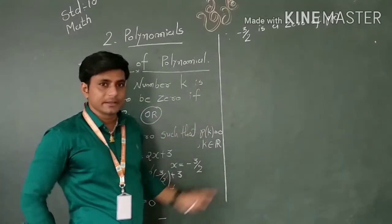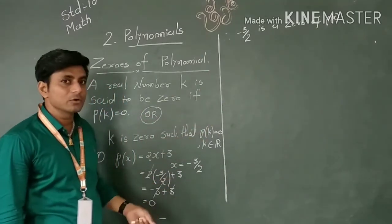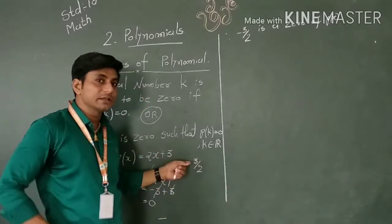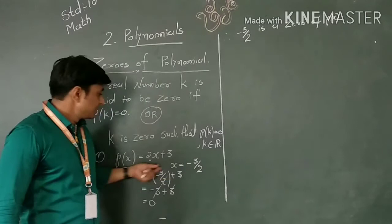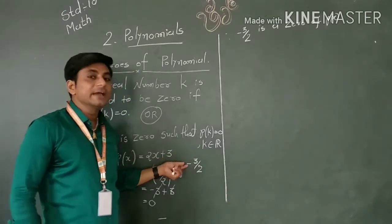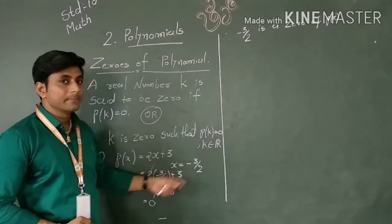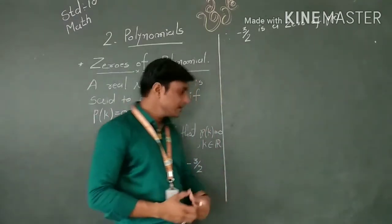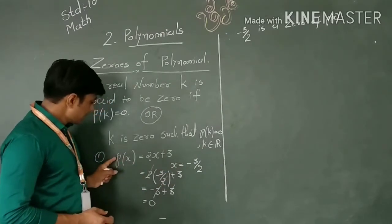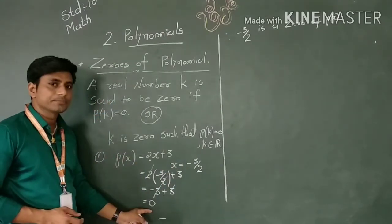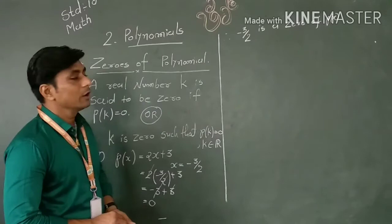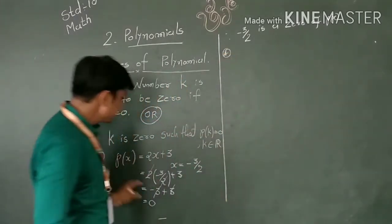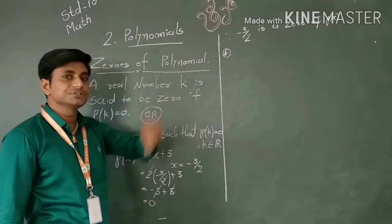This is the algebraic meaning. How do we find the zero? Here I chose x equal to minus 3 upon 2 randomly, but there are other ways to find the value of x where p of x equals zero. Now let's see the geometrical meaning.